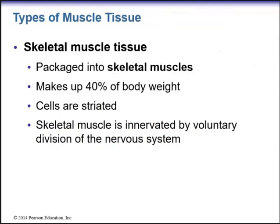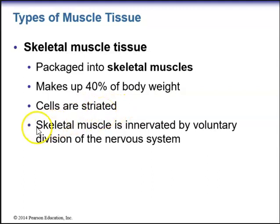In the first unit, we talked about the three types of muscle tissue: skeletal, cardiac, and smooth. In this chapter, we'll discuss each type in detail. Skeletal muscle tissue is packaged into skeletal muscles and makes up about 40% of body weight. The cells are striated, meaning they have alternating dark and light bands, and skeletal muscle is innervated by the voluntary division of the nervous system — we have voluntary control over skeletal muscle.